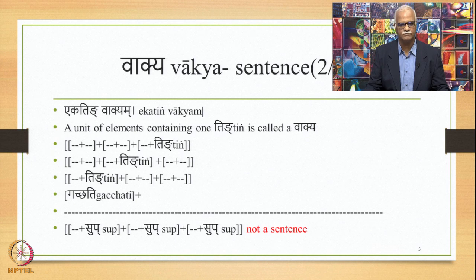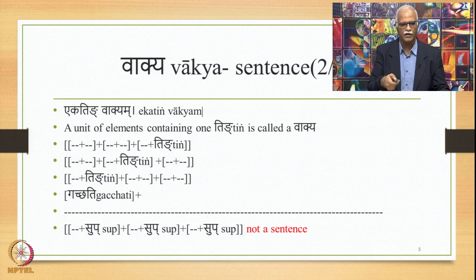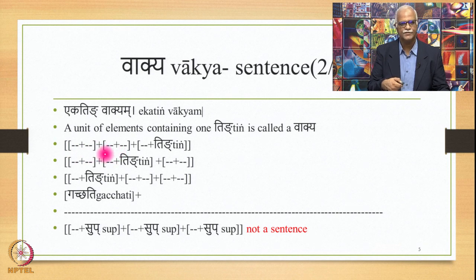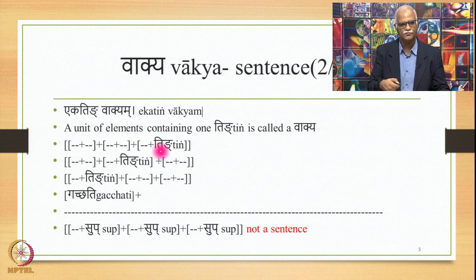The two Vārtikas are Ekatiṅ Vākyam and Ākhyātaṃ sāvyaya kāraka viśeṣaṇaṃ vākyam. What is the meaning of Ekatiṅ Vākyam? It means a unit of elements containing one Tiṅ is called a Vākya. For example, if we have a sentence of this kind with three sub-units, some element on the left-hand side plus a right-hand side element, and so on for three words. In the third word there has to be a right-hand side element which has to be a Tiṅ. If this is the case, this entire unit can be called a sentence.